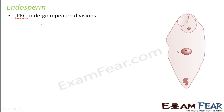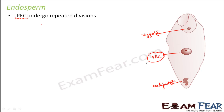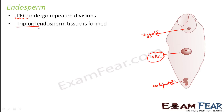The primary endosperm cell undergoes many more cell divisions and forms triploid endosperm tissue. This remains triploid because these repeated divisions are not meiotic — they are mitotic divisions. So the ploidy remains the same; there is no reduction in chromosome number. Triploid will remain triploid, and so triploid endosperm tissue is formed.